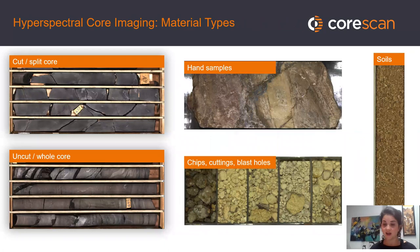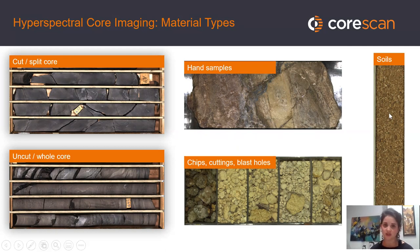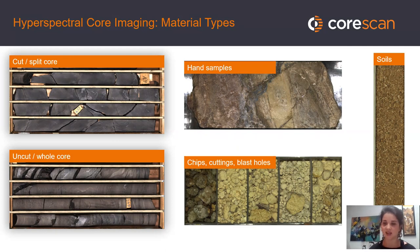When you talk about what CoreScan can do for your project — can you look at chips, whole core, does it have to be split or cut? We can look at all of them. We image tons of different materials: soils, blast holes, and if you're in the oil industry, we do a lot of cuttings. All of these can be imaged and analyzed without issue.